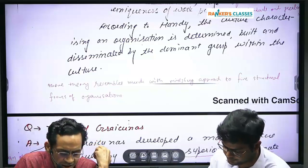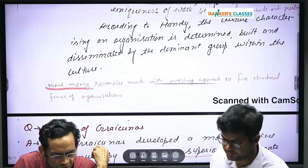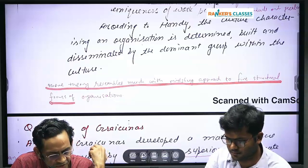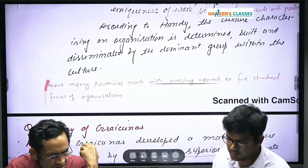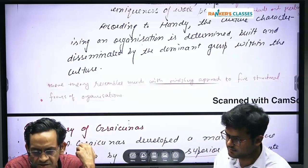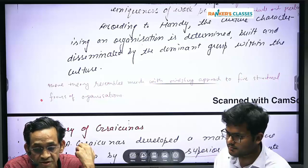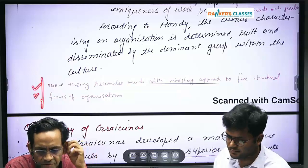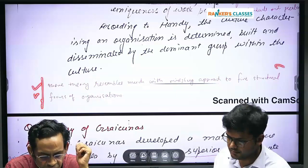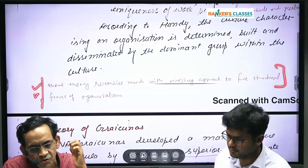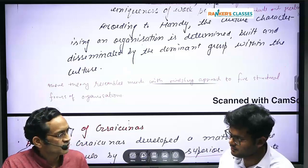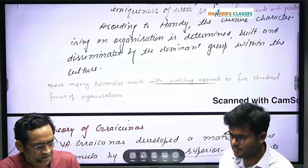You can write that organizations have subcultures, so defining any organization from just one perspective would be a narrow approach. You could also write that this theory resembles Mintzberg's approach to five structural forms of organization — centralized structure, adhocracy, machine bureaucracy, professional bureaucracy. If you connect one theory with another it makes your answer more authentic and shows you can apply it properly.